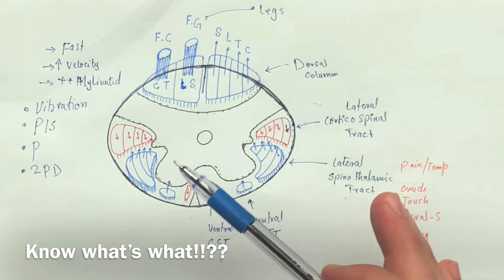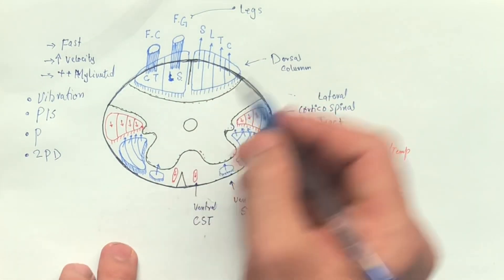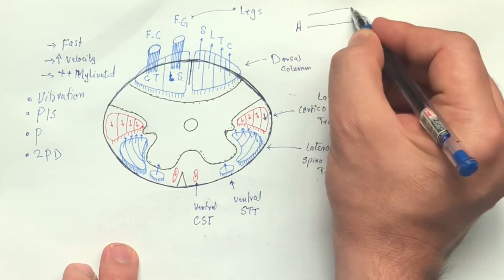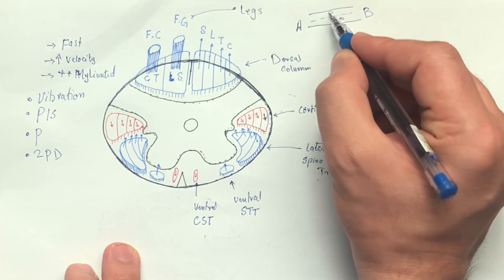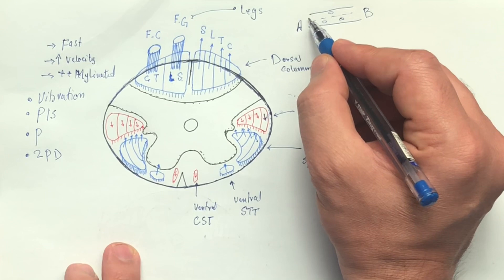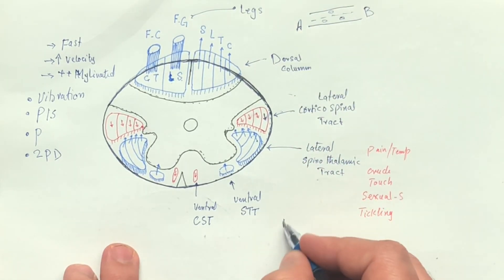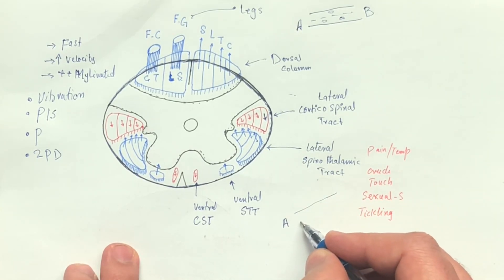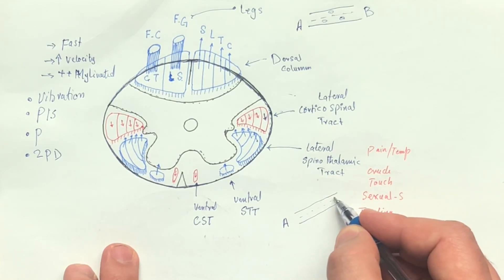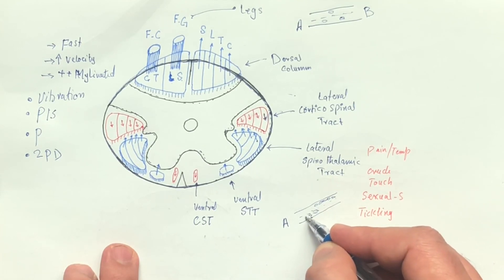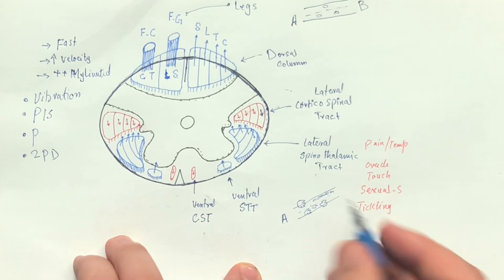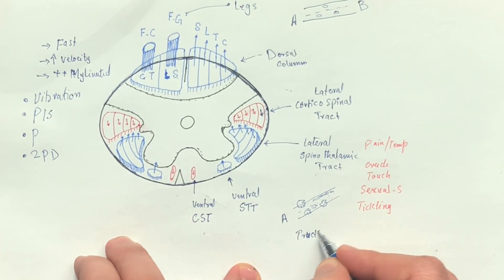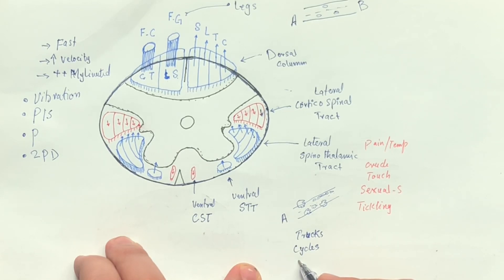The dorsal column receives one kind of information, but the spinothalamic tract receives a very different variety. To remember, think of a well-developed highway — very myelinated, less traffic meaning less variety of information — so you get from point A to B very fast. Now draw another road: a narrow road with a variety of traffic. It's crowded and broken, meaning low myelination. Since there is a variety, getting from point A to B will take longer — it's slow. There's a variety of traffic like trucks, cycles, bicycles, people — all kinds of traffic go through this road, making it a variety of information. This is how to remember.